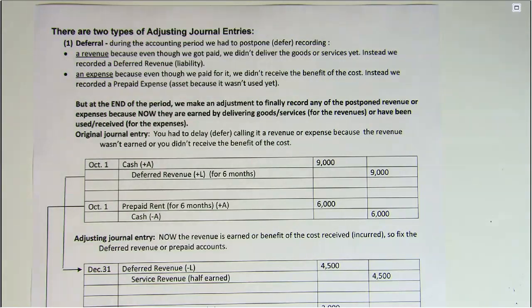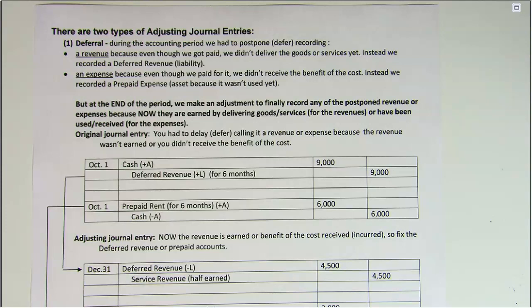And the same thing happens with expenses. If we pay for something before we receive the benefit of the cost, then it isn't an expense yet — it's an asset. For example, supplies. If you pay for supplies now and don't use them until later, then initially you have a future economic benefit, which is an asset.